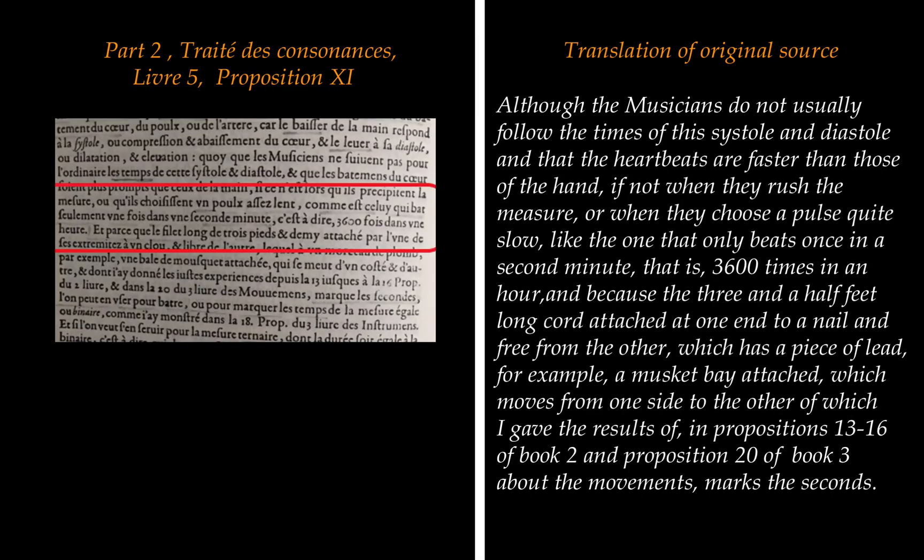Merzen connects the heartbeat — the pulse — to the second, and uses this to set the standard reference for the slow pulse, or what we would call tempo ordinario: a very slow pulse as one that beats only once in a second, meaning 3600 times in an hour.